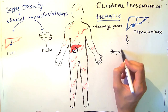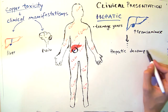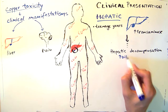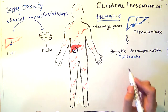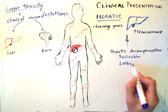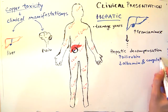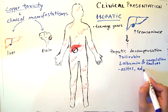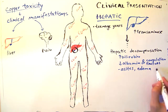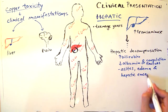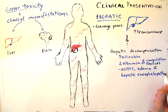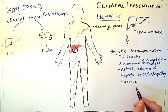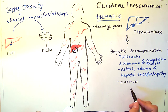Cirrhosis ends up in hepatic decompensation. Hepatic decompensation is associated with elevated bilirubin in the serum, reduced serum albumin and coagulation factors, ascites, peripheral edema, and hepatic encephalopathy. Sometimes the number of red blood cells is decreased, thus leading to anemia.